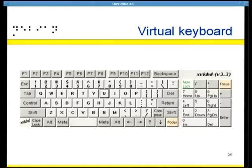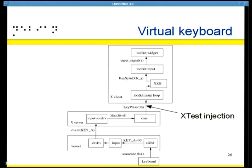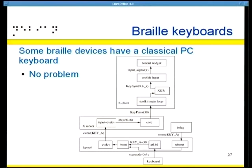A virtual keyboard works by showing a keyboard you can click with the mouse. There are some focus details, but basically that's it. It works by injecting key presses between the X server and the X client — it injects key codes, which are physical positions. So it works well with an actual PC keyboard shown on the screen. For Braille devices with a classical PC keyboard, BrailleTTY discusses with the device and injects physical positions right into the kernel, so it works both in text mode and Xorg.